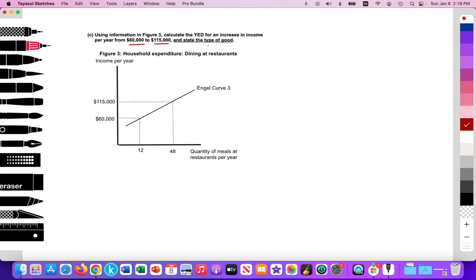Is it an inferior good, a normal good? And if it's a normal, is it a necessity or a luxury? Figure 3, household expenditure on dining at restaurants. We're measuring income on the Y-axis and quantity of meals at a restaurant per year on the X-axis.